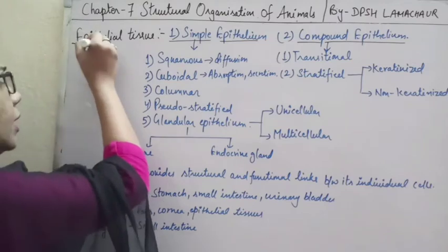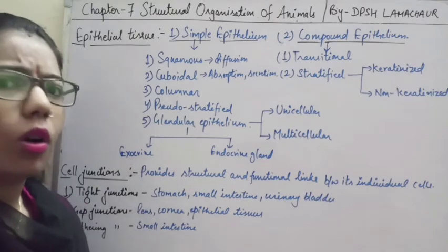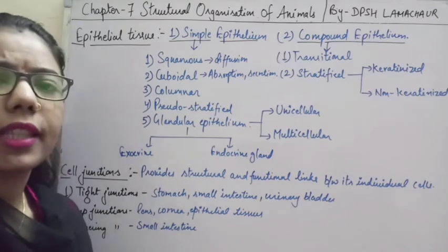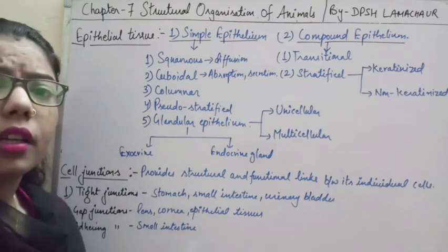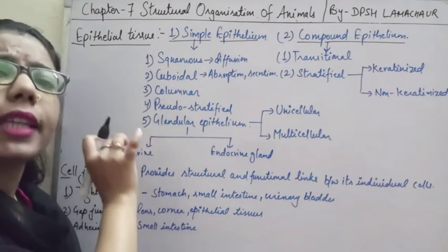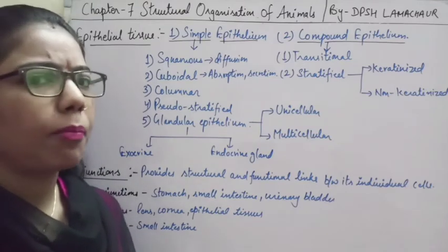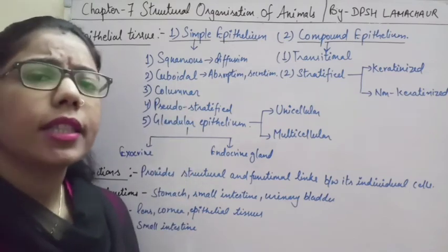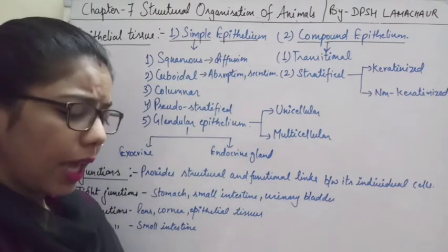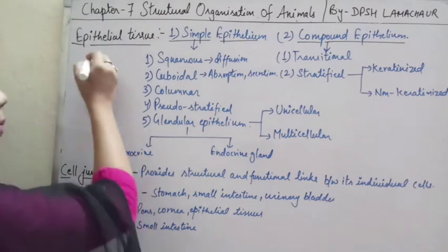Epithelial tissue is something which is covering the free surfaces of the organs. Tissue is a group of cells having the same origin. We have classified epithelial tissue into two parts — simple and compound. Simple epithelium is a single layer of cells, while compound epithelium has more than one layer of cells.